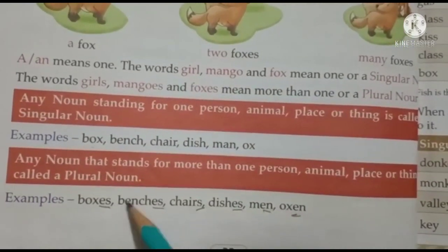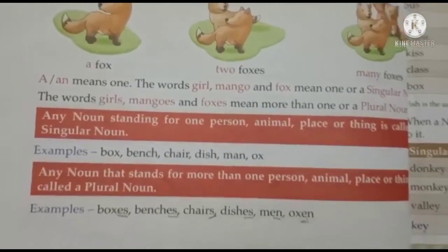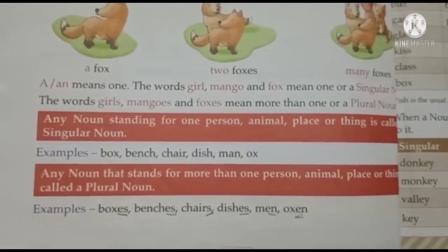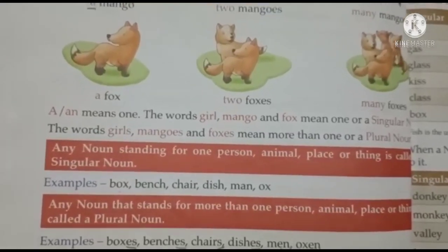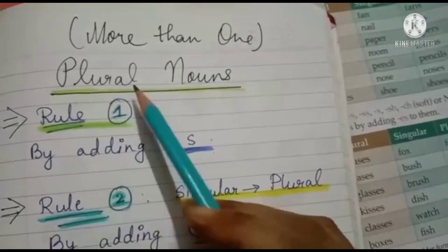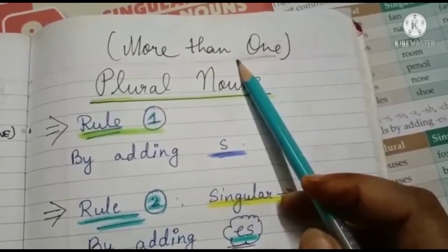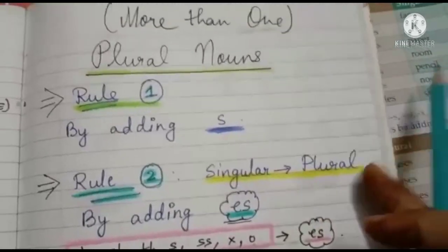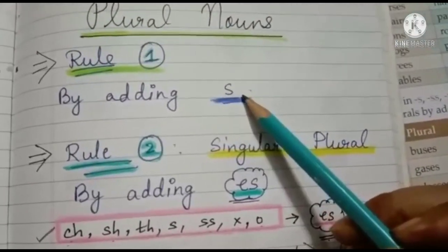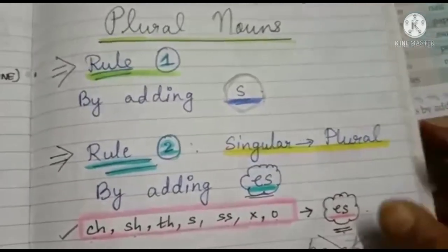Any noun that stands for more than one person, animal, place or thing is called a plural noun. We are going to study now various rules of changing singular nouns to plural. There are certain rules you need to follow. Singular means one and plural means more than one — it can be two or many. The first rule says we can change singular words to plural by adding 's'.